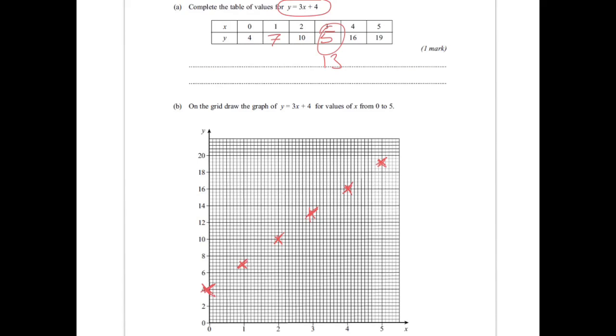And so the next thing I do is then I join up my line. I join up all those points with a line. There's my line drawn. And one last thing I want to do is just to put the equation of the line. y equals 3x plus 4. Just write it at the top or bottom of the line.